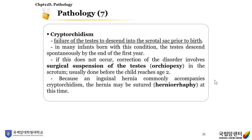Cryptorchidism is the failure of the testis to descend into the scrotal sac prior to birth. In many infants born with this condition, the testis descends spontaneously by the end of the first year. If this does not occur, correction involves surgical suspension of the testis in the scrotum, called orchiopexy, usually done before the child reaches age 2. Because an inguinal hernia commonly accompanies cryptorchidism, the hernia may be sutured (herniorrhaphy) at this time.